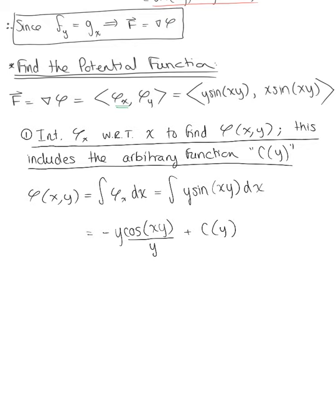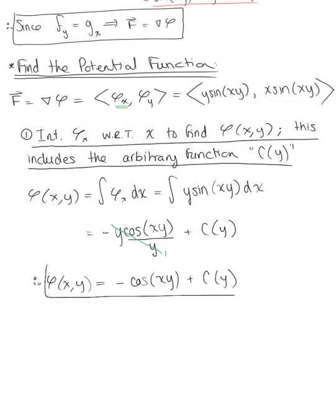Just as with anti-derivatives we have a constant plus C, here with multivariables we must include an arbitrary constant function of the missing variable. The Y terms cancel, leaving our initial potential function phi(X,Y) equal to minus cosine of XY plus C(Y). We now ask: what is C(Y)? That is step two.